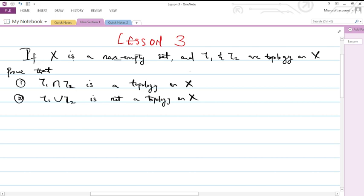I want to prove that the intersection of two topologies is a topology on X, and also the union of two topologies is not a topology on X.